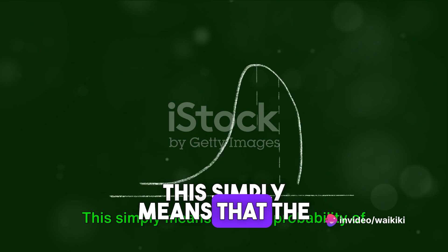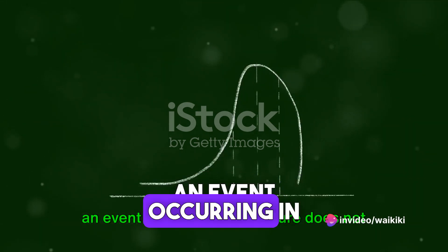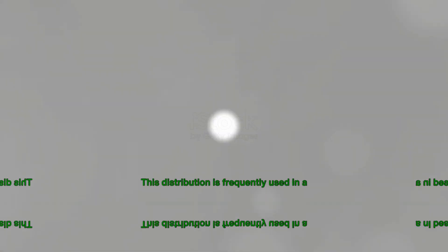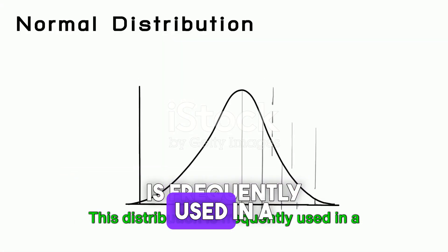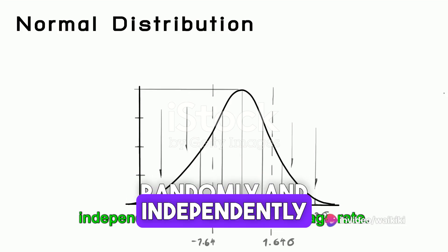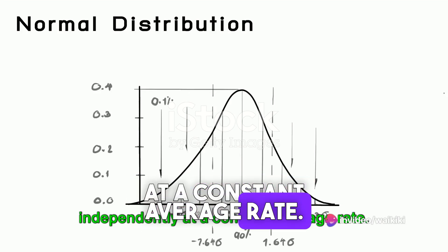This simply means that the probability of an event occurring in the future does not depend on how much time has already passed. This distribution is frequently used in a Poisson process, a mathematical model where events occur randomly and independently at a constant average rate.